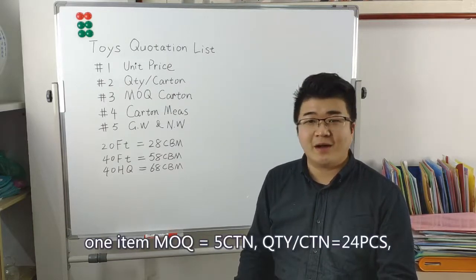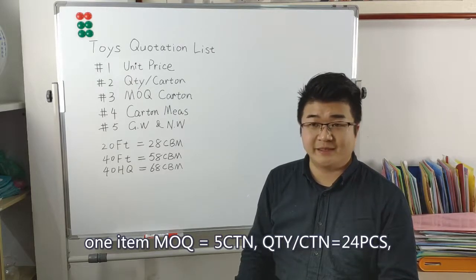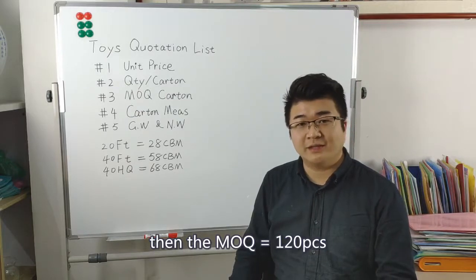For example, one item, the MOQ is 5 cartons. Per carton, the quantity is 24 pieces. Then the MOQ is 120 pieces.